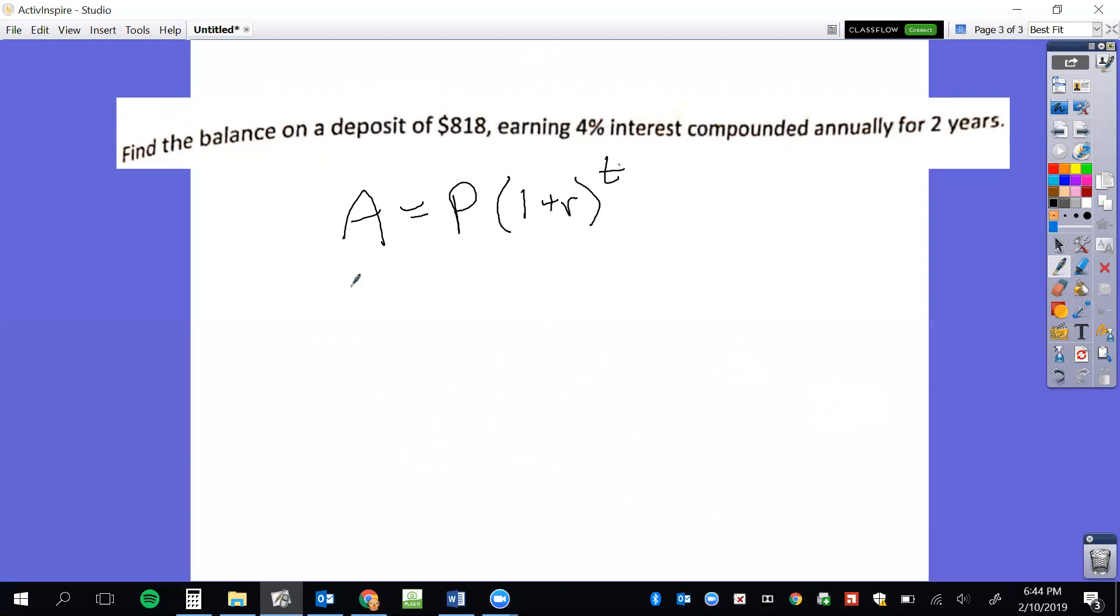So if I plug in my numbers, what I'm given, it says find the balance on a deposit of $818. So again, that's my principal or my starting amount. Earns 4% interest, that's my rate. And remember, we always write it as a decimal. And it's compounded, so there's your keyword that tells you which formula to use. And it says for two years, which is my time. So if I plug those pieces in, 818 times 1 plus .04, and it's over two years, so we're going to put a two up here in my exponent.